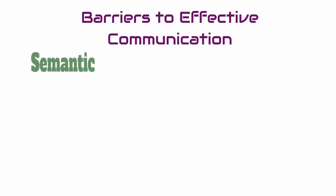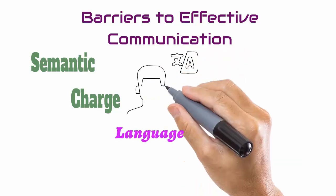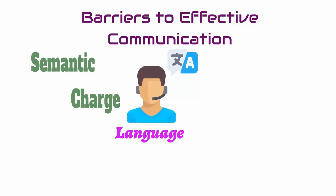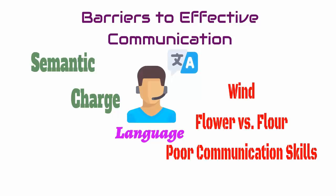Another type of barrier in communication is the semantic barrier. In this, there may be words that have multiple meanings, like 'charge,' which may mean electrical charge or cost of an item. Another semantic fault may appear due to words like 'wind' and 'wind,' which are spelled the same but pronounced differently and have different meanings. There are also words that sound the same but have different spellings and different meanings, like 'flower' or 'sight.' Poor communication skills are yet one of the biggest reasons for semantic and language barriers.